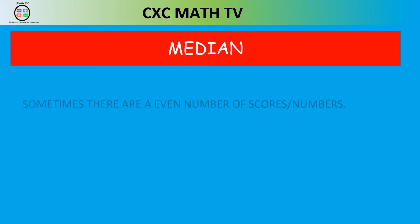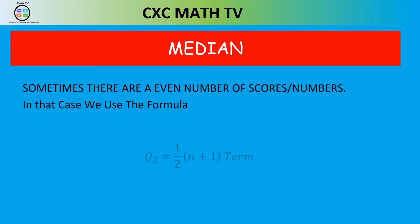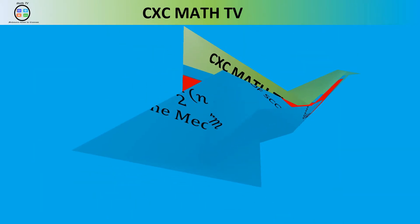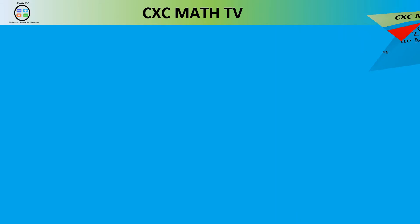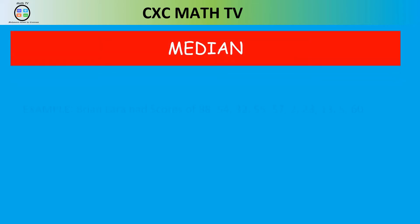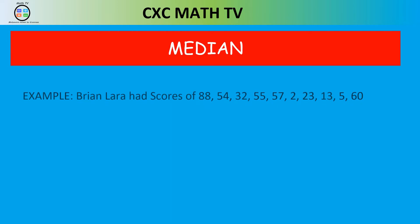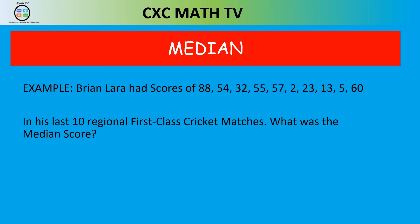Sometimes there are an even number of scores. In that case, use the formula: the median Q₂ is at position ½(n+1). For example, Brian Lara had scores of 88, 54, 32, 55, 57, 2, 23, 5, 13, and 60 in his last 10 regional first-class cricket matches. What was his median score?